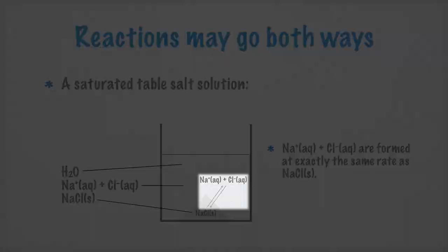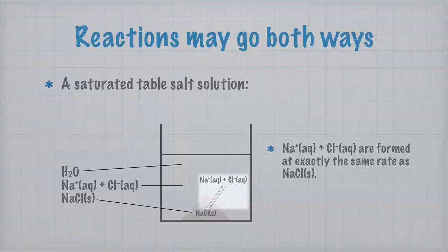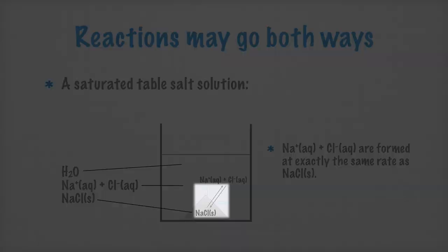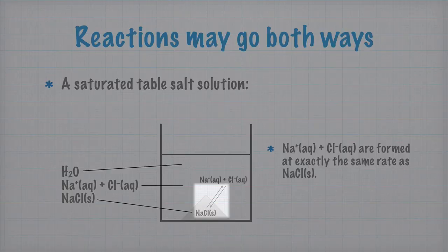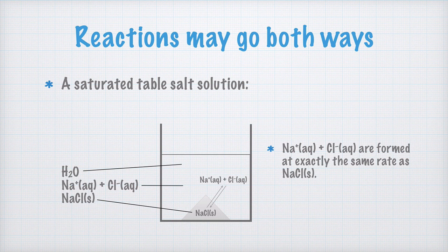These two reactions - we have the reaction to the right, where solid sodium chloride turns into aqueous sodium and chloride ions, and the reaction to the left, where aqueous sodium and chloride ions form solid sodium chloride. They balance each other, and this means that the system is at equilibrium.